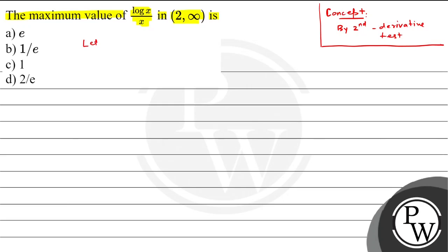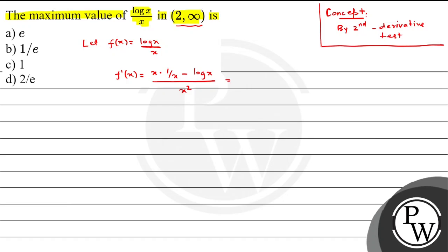Let f(x) = log(x)/x. They are asking the maximum value of this function in the interval [2, infinity). First we will find the first derivative f'(x). By the quotient rule: x as it is, differentiation of log(x) is 1/x, minus log(x) as it is, differentiation of x is 1, divided by x squared. This simplifies to (1 - log x) / x squared.